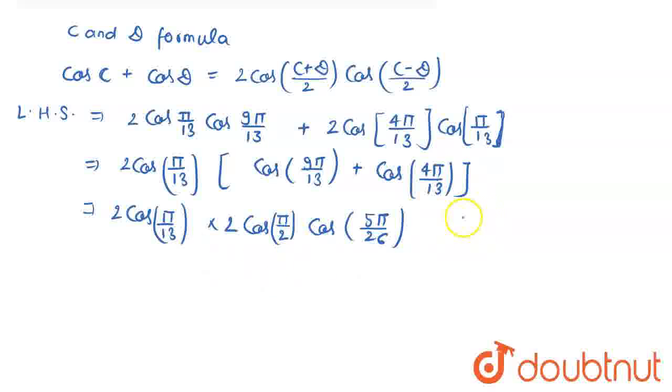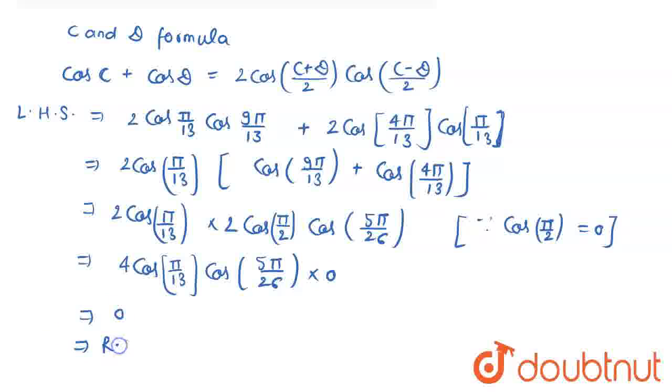Now, pay attention here. We all know that cos of pi by 2 is equal to 0, so irrespective of the value of the other terms, this entire multiplication is going to be 0. So, you can write it as 4 times cos pi by 13, into cos of 5 pi by 26, into 0, and it is 0, which is my right-hand side. Hence, you have proven the given question.